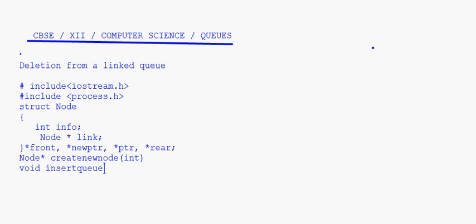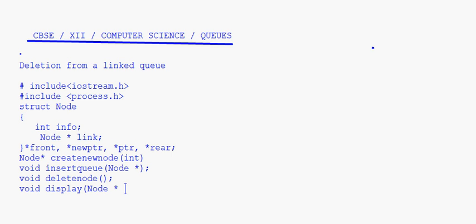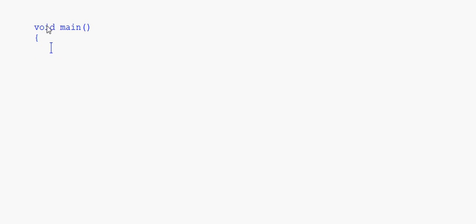We have the insert queue function where you pass the address, and now we look at the delete function. For delete node, you don't have to pass any parameters at all. Then we have the void display function in which you pass the address of the front node. These are the prototypes we need.